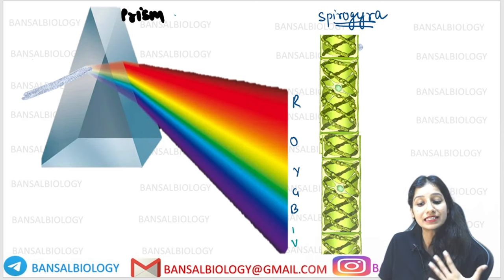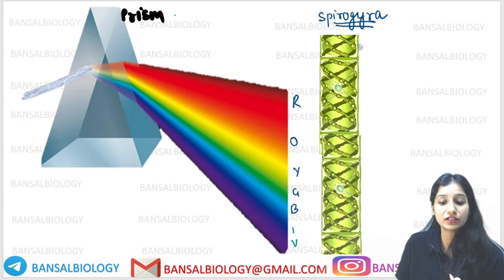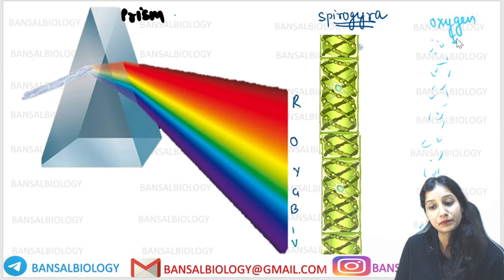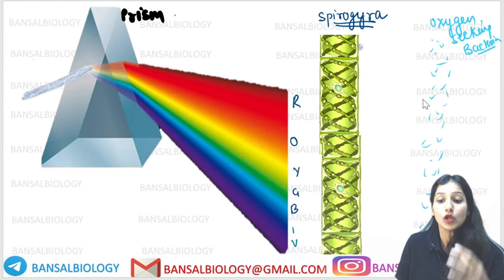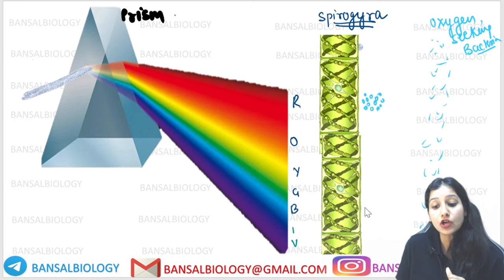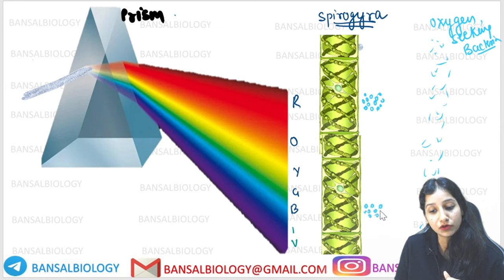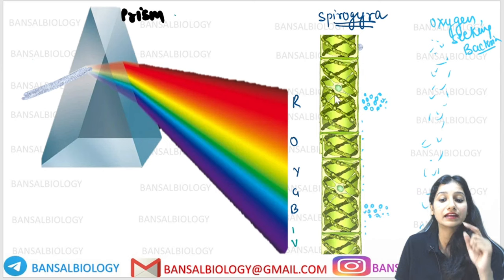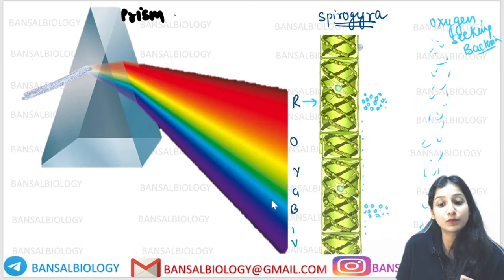They put oxygen-seeking bacteria in front of the Spirogyra. These oxygen-seeking bacteria simply move toward oxygen. The bacteria were kept all along the spectrum. After observing, they saw that the most clumping of bacteria occurred in two areas — the most clumping was in the red region and in the blue region. There was not much clumping in the rest of the regions.